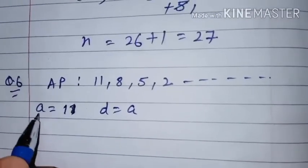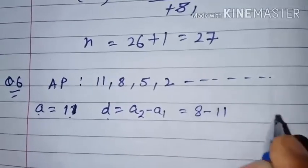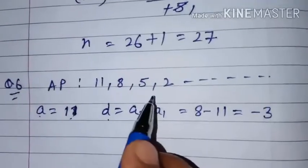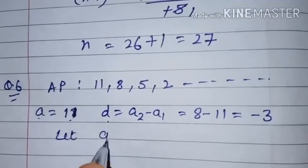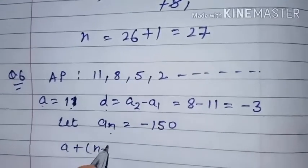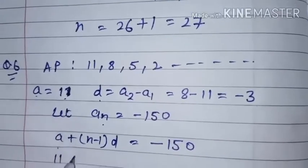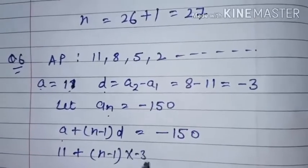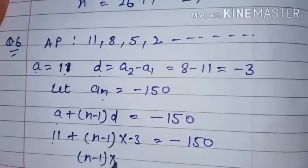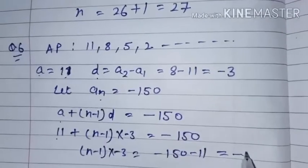For the solution: first term A is 11, and D equals A2 minus A1 equals 8 minus 11, which is minus 3. Now to check if minus 150 comes in this AP, we let the last term equal minus 150. Using the formula A plus (N minus 1) into D equals minus 150: substituting gives 11 plus (N minus 1) into minus 3 equals minus 150. Taking 11 to the right hand side: (N minus 1) into minus 3 equals minus 150 minus 11, which gives minus 161.